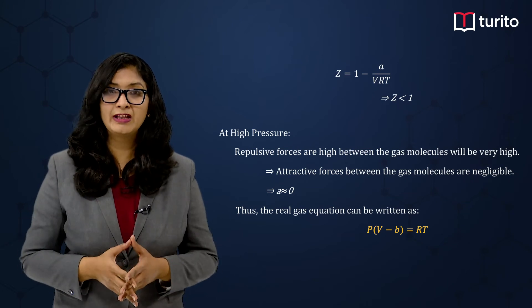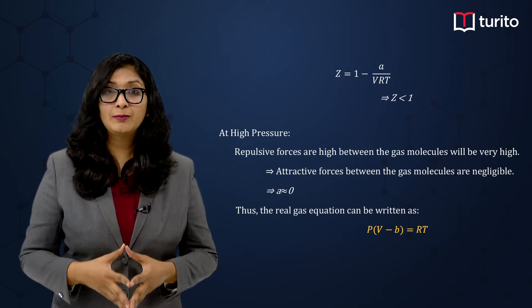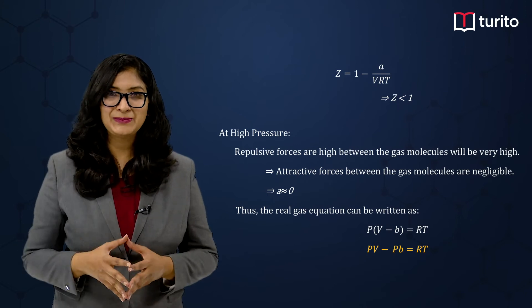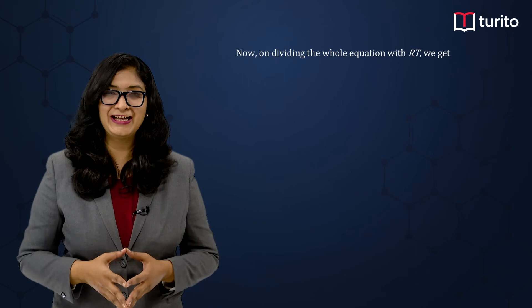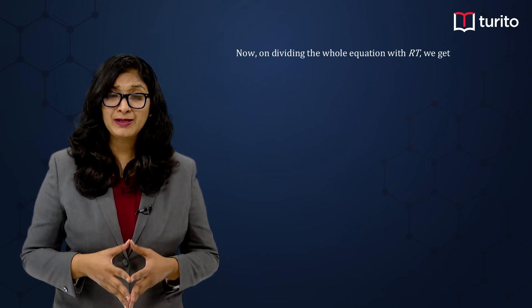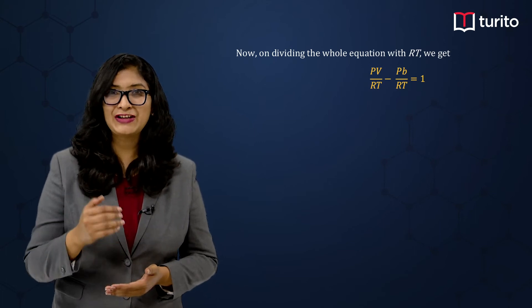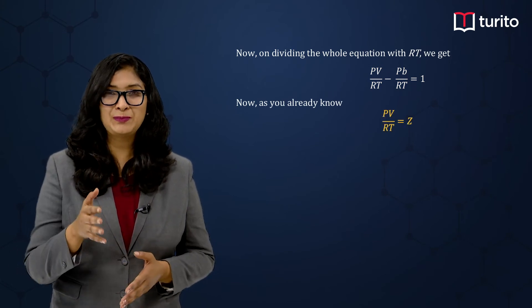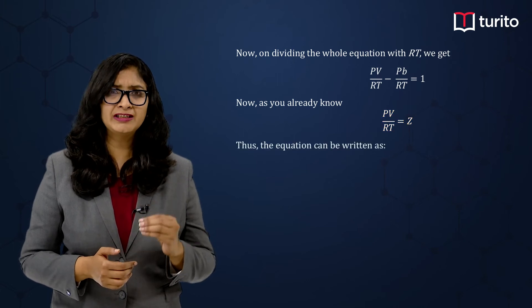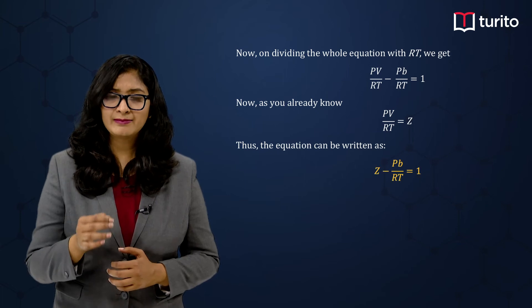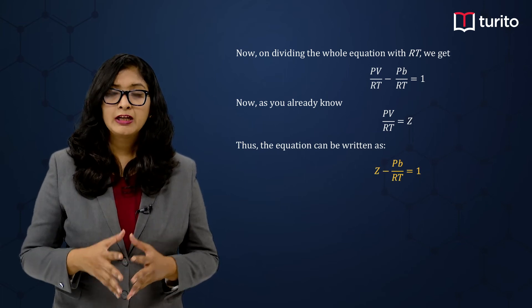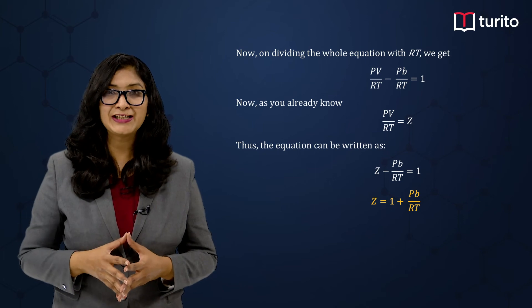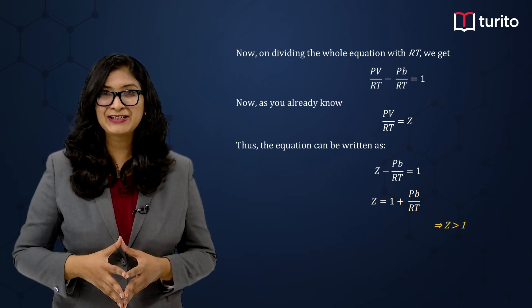Opening the bracket gives: PV − Pb = RT. Dividing the whole equation by RT: PV/RT − Pb/RT = 1. Since Z = PV/RT when n = 1, substituting gives: Z − Pb/RT = 1. Transferring the term to the other side: Z = 1 + Pb/RT. This means Z is greater than 1.